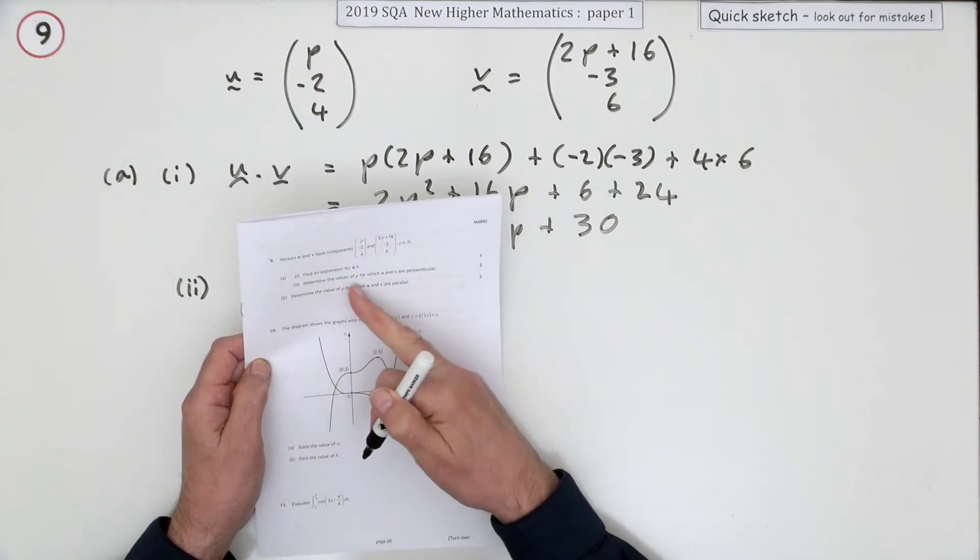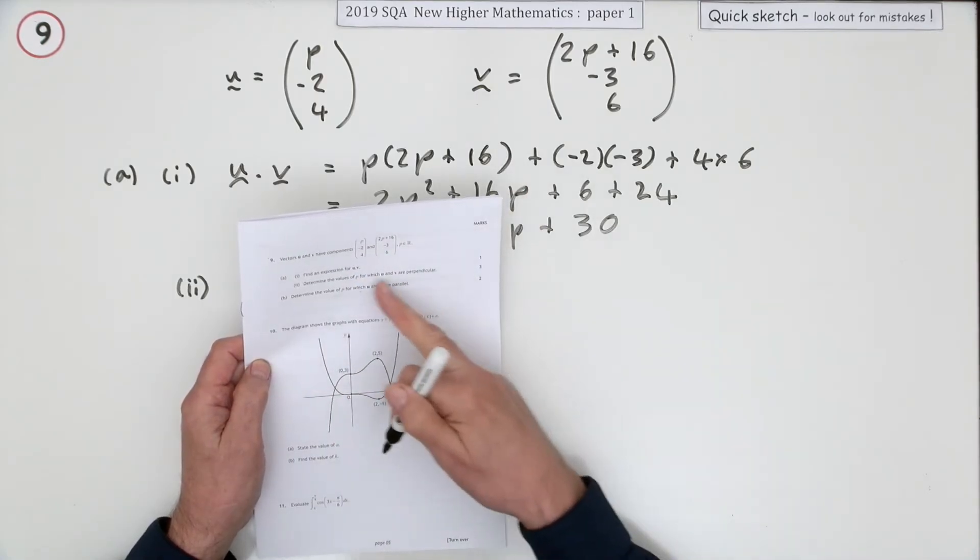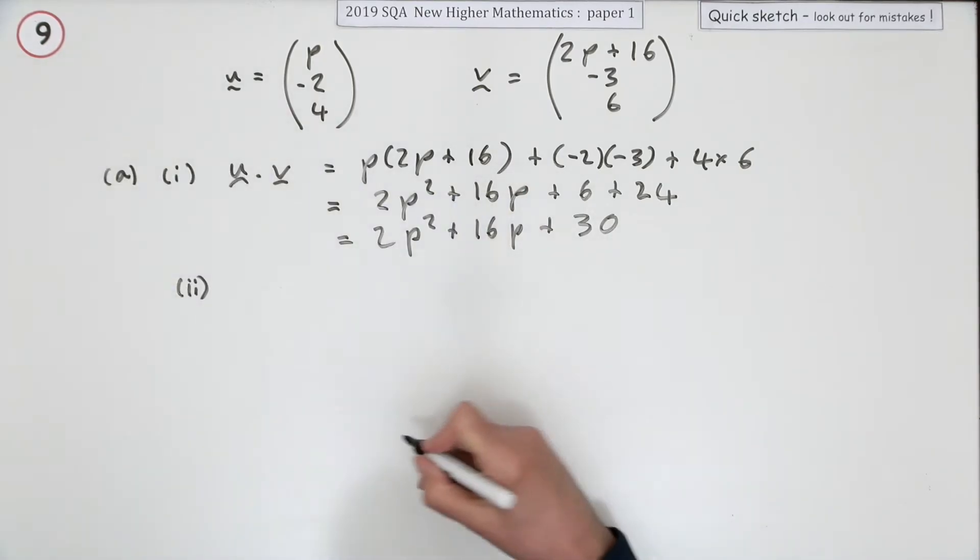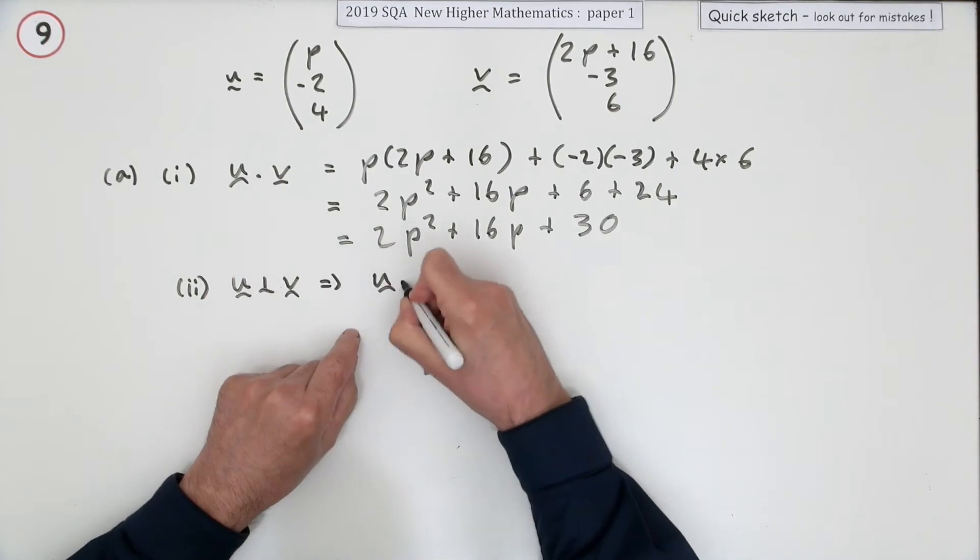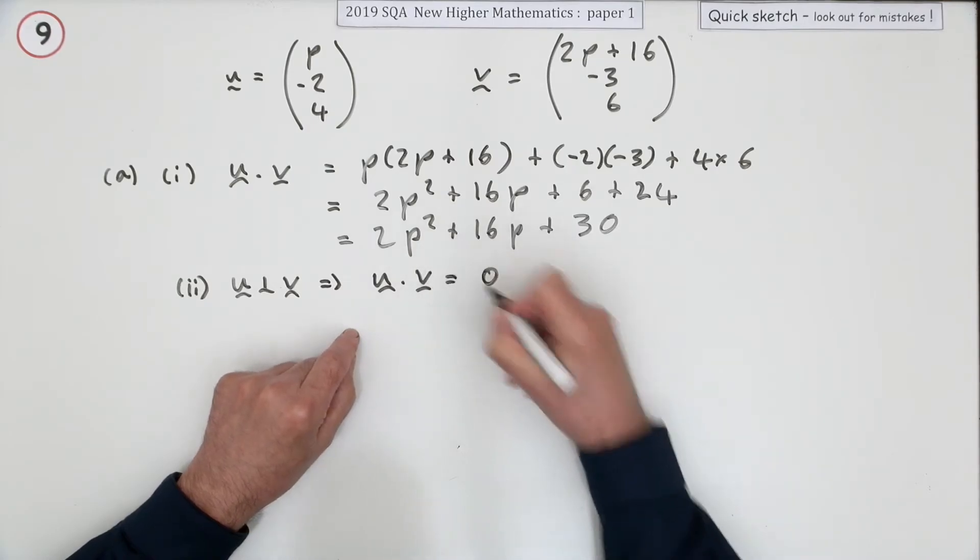Part two: determine the values of p, values plural, for which u and v are perpendicular. Well, u is perpendicular to v means that u dot v, the scalar product, should be zero.